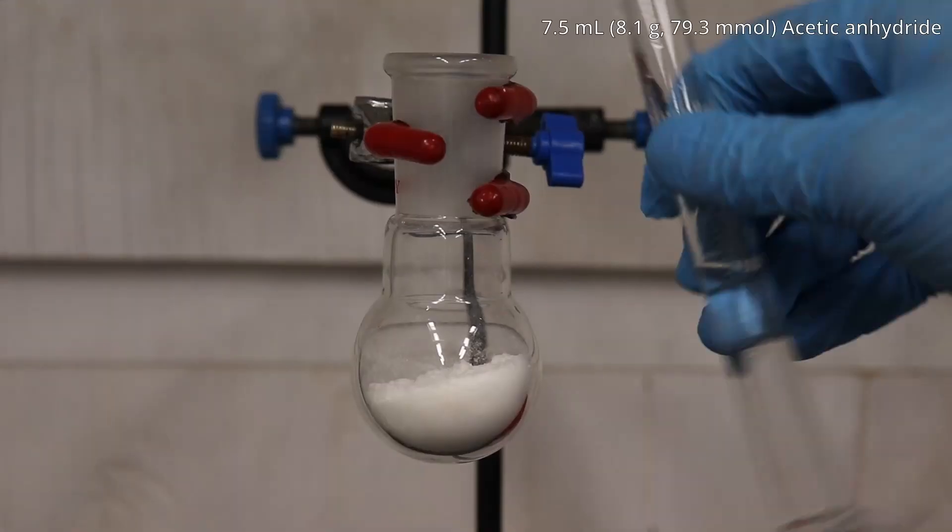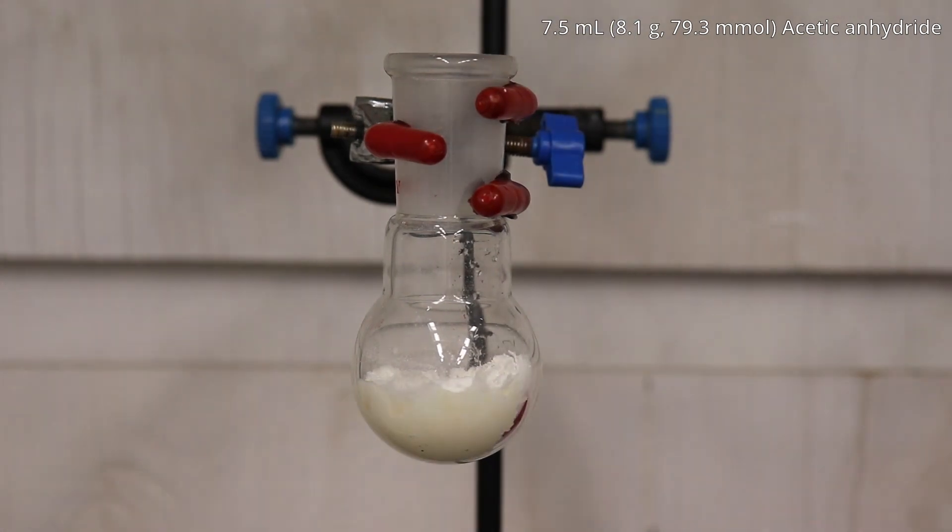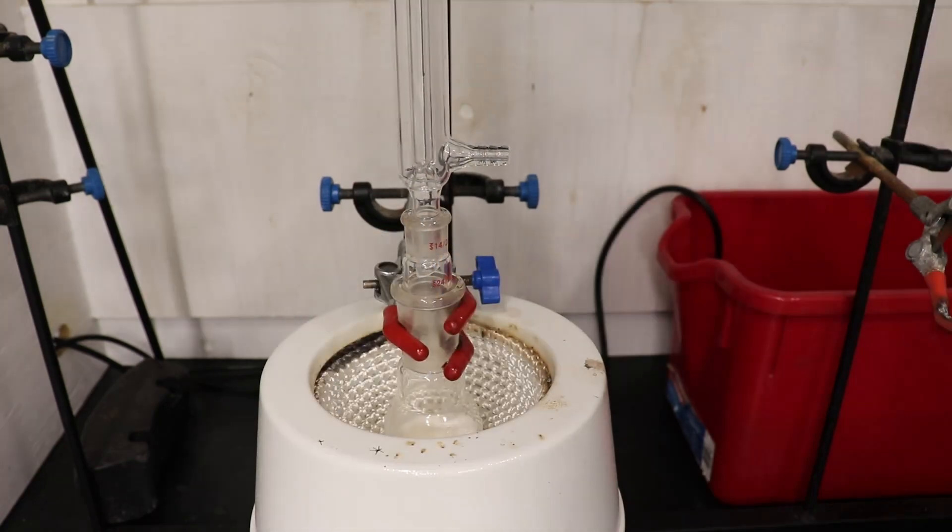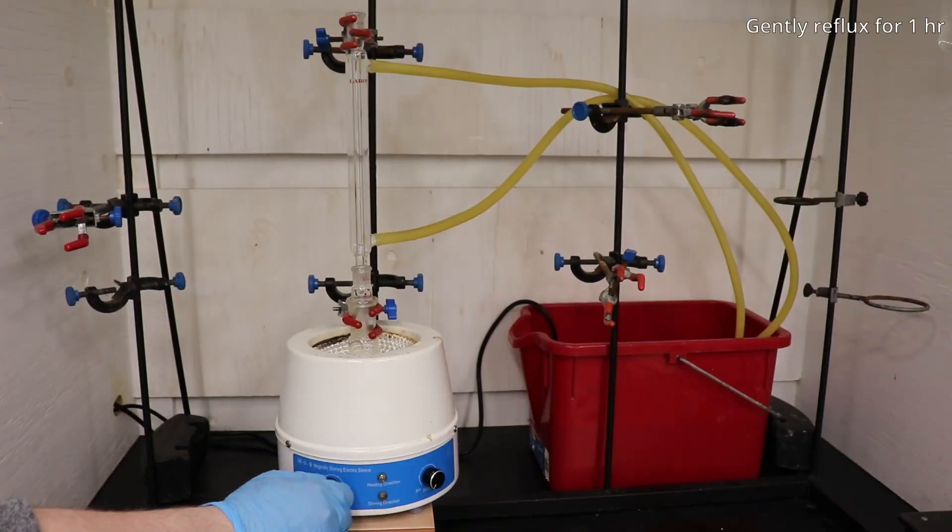This was followed by the addition of 7.5 mils of acetic anhydride. The flask was then set in a heating mantle, a condenser was attached, and the mixture was refluxed for one hour.